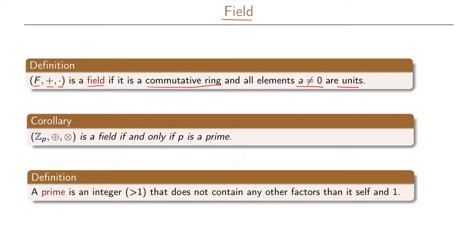From this it follows that ℤ_p with addition modulo p and multiplication modulo p is a field if and only if p is a prime. Because if p is a prime, all the elements in this set will be relatively prime with p, so the GCD of any element and p is one, which means that the element is a unit. A prime is an integer larger than one that does not contain any other factors than itself and one.